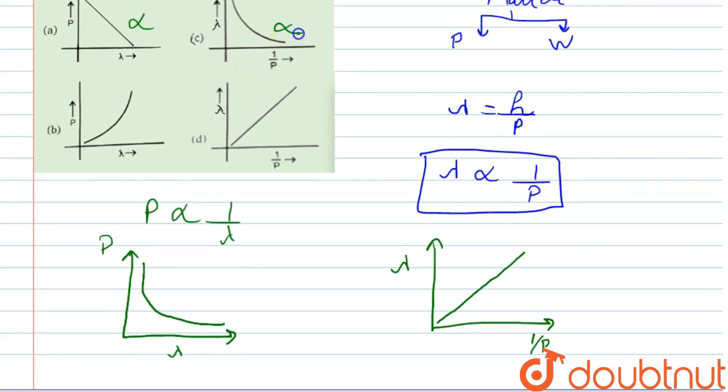The answer c is also incorrect. B is also incorrect, and in option d we can see the graph is correct between lambda and 1 by p. So it will be the right answer.